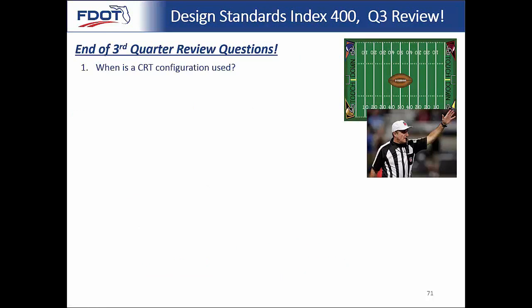We've reached the end of the third quarter — review questions. Question 1: When is a CRT configuration used? That's our short radius guardrail system, used for 90-degree intersections of principal roadways and side streets or driveways. It doesn't have to be exactly 90 degrees — you can taper to that 90-degree radius at the taper rates provided in the IDS, which gives a little more flexibility.